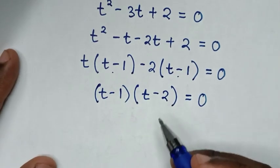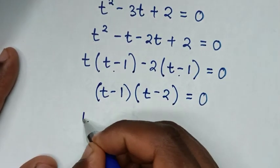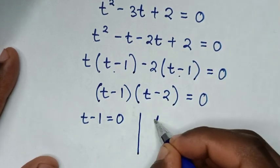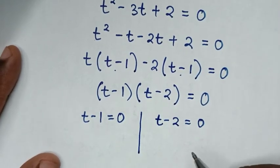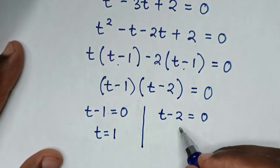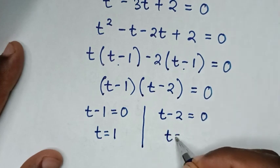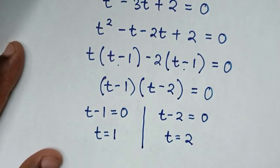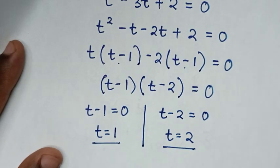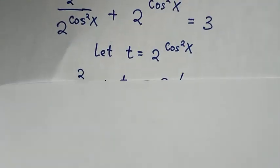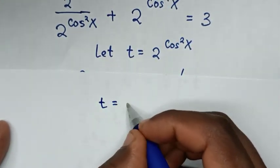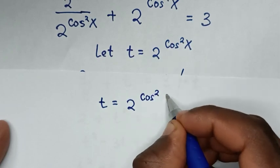We have two solutions: t - 1 = 0, giving t = 1, and t - 2 = 0, giving t = 2. Recalling that t = 2^(cos²x), we now substitute each value of t.